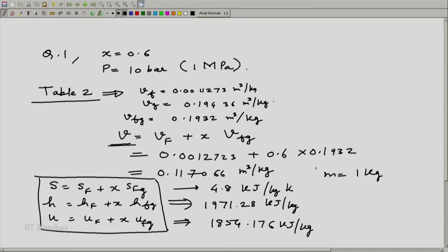I will just multiply these parameters by 1 kg and then get the value of S as 4.8 kJ/K, H = 1971.28 kJ and U = 1854.176 kJ. This will be my answer to this question.